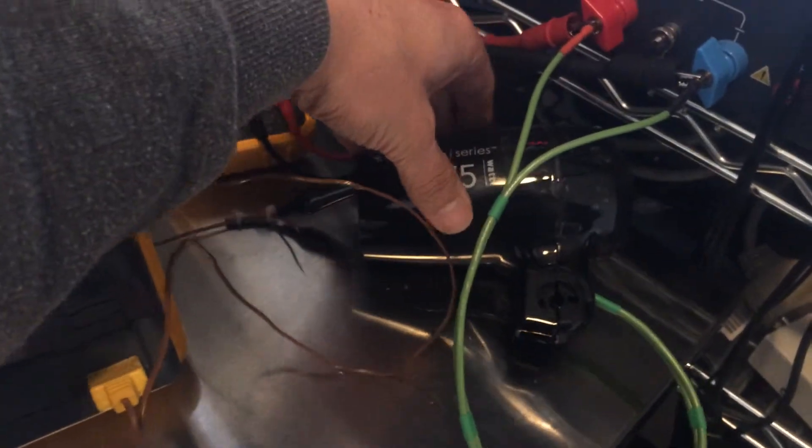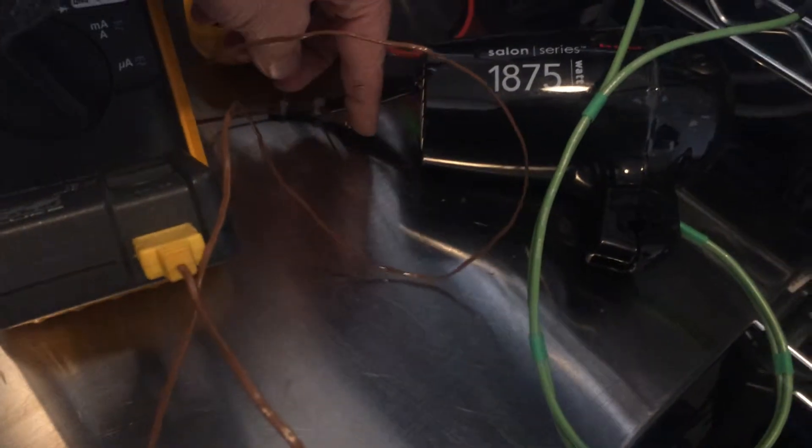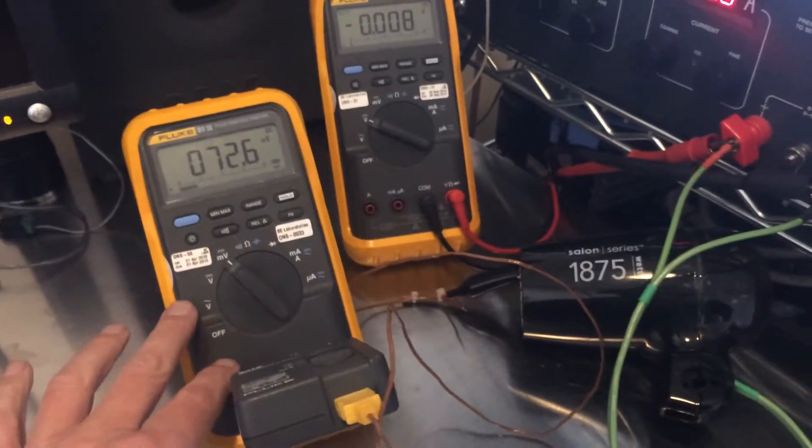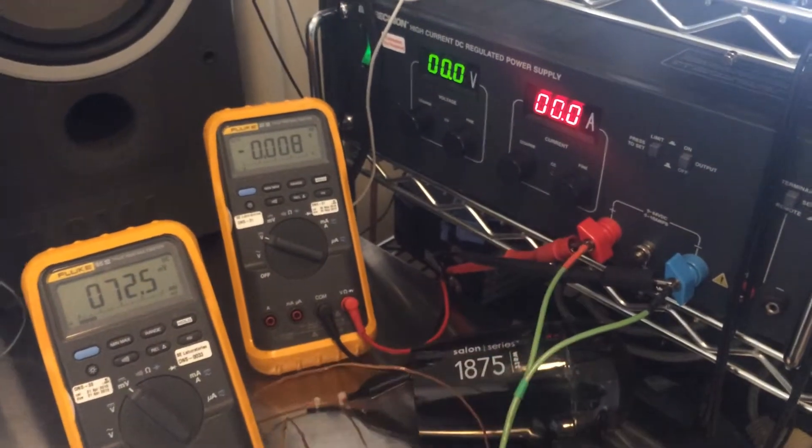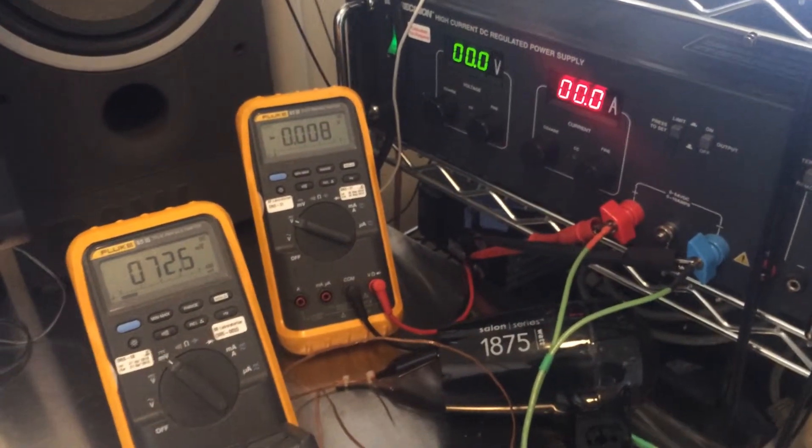Okay, so I have the completed hairdryer resistor network, a thermocouple right in front of it, connected here that's reading the temperature, and it's connected to a 10 amp constant current power supply.